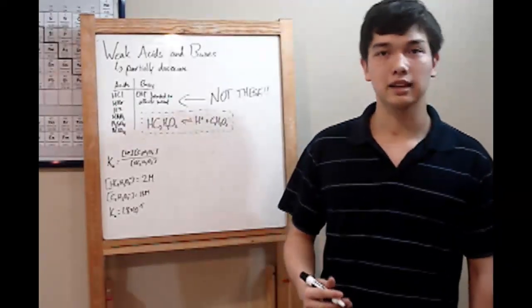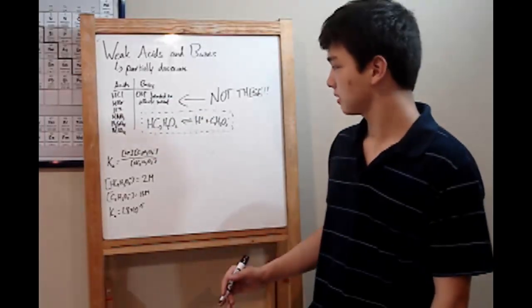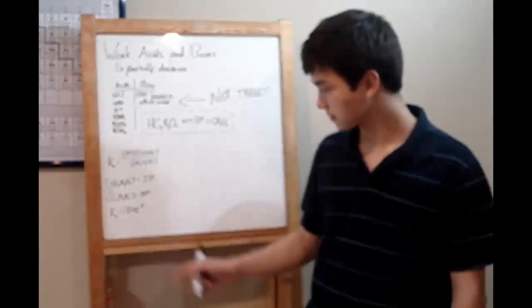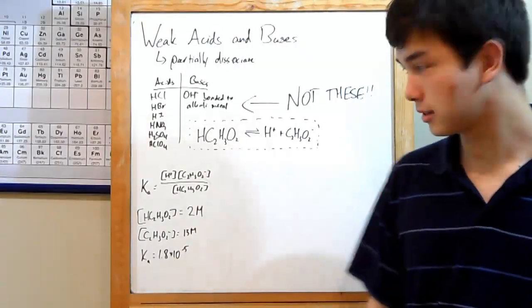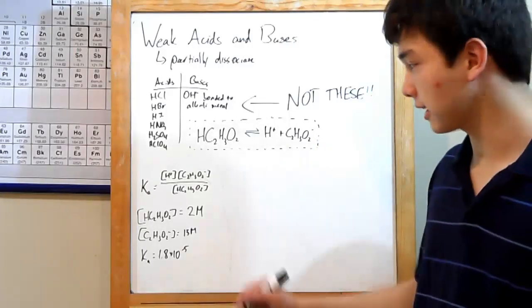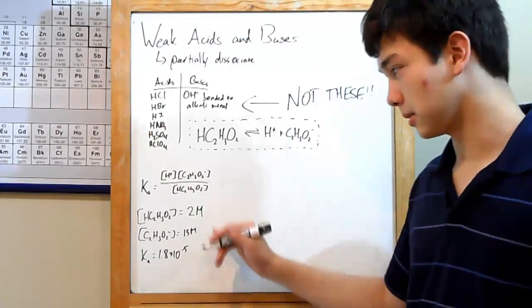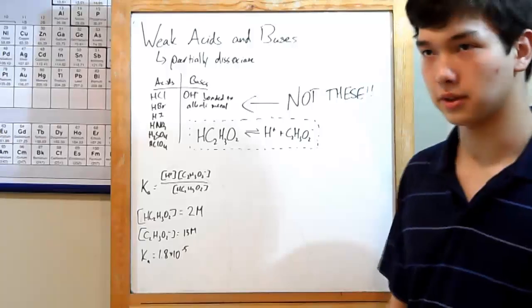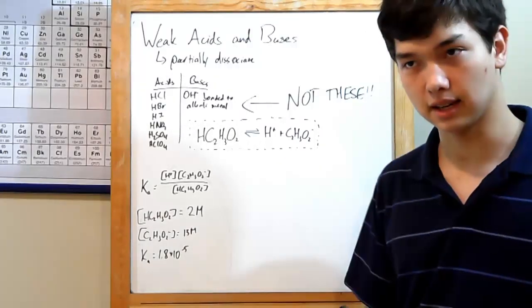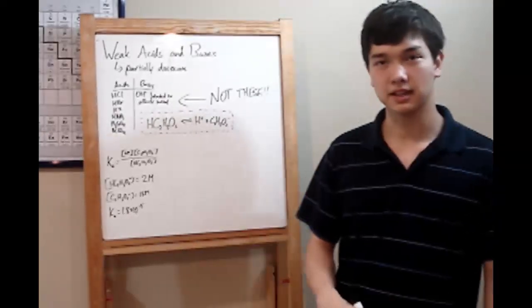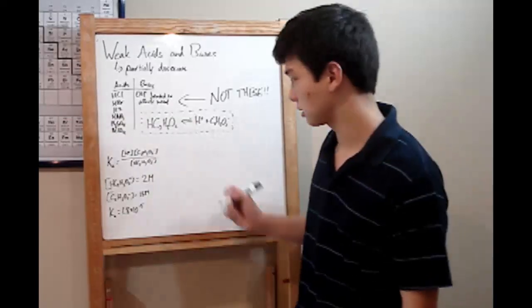Let's say you're eating lunch and you had dumplings and vinegar. And you knew that your Ka for vinegar was 1.8 times 10 to the negative fifth. You also knew your concentration of vinegar was 2 molar, and the concentration of your acetate ion was 15 molar. Using this, you can calculate what the pH of your lunch is.